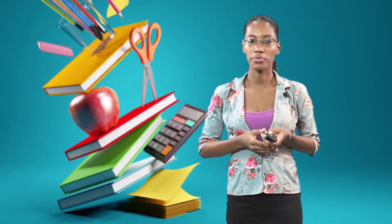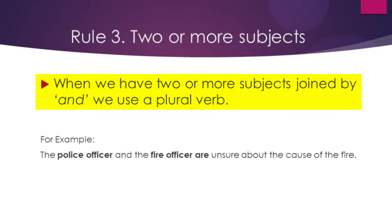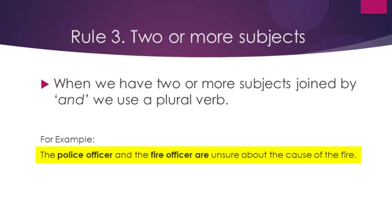Rule number three is a bit catchy, so pay attention. When we have two or more subjects joined by AND, we use a plural verb. For example: the police officer and the fire officer are unsure about the cause of the fire. We're talking about two persons — the police officer and the fire officer — joined by the conjunction AND. So when two or more subjects are joined by AND, we use the plural form of the verb.